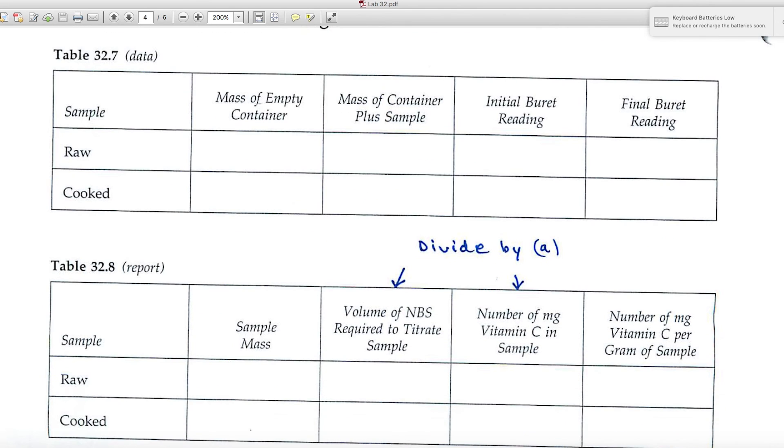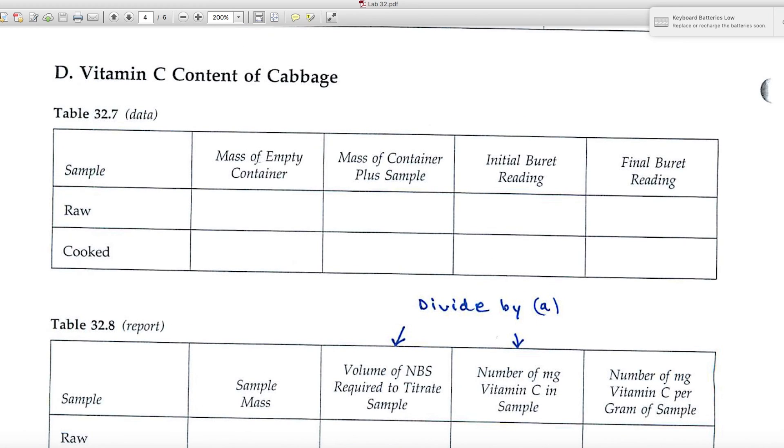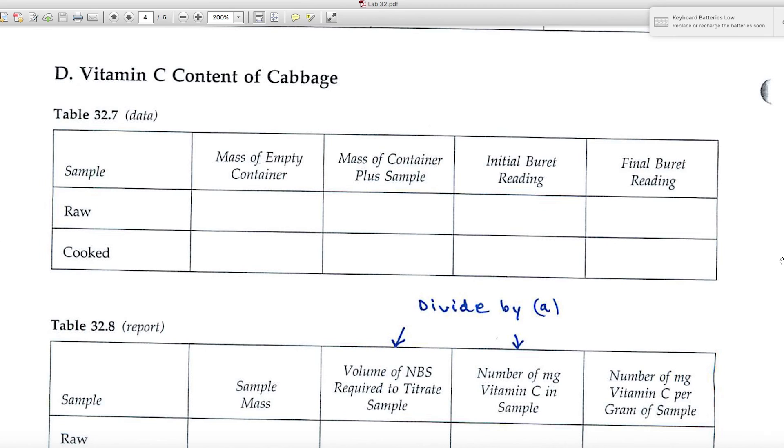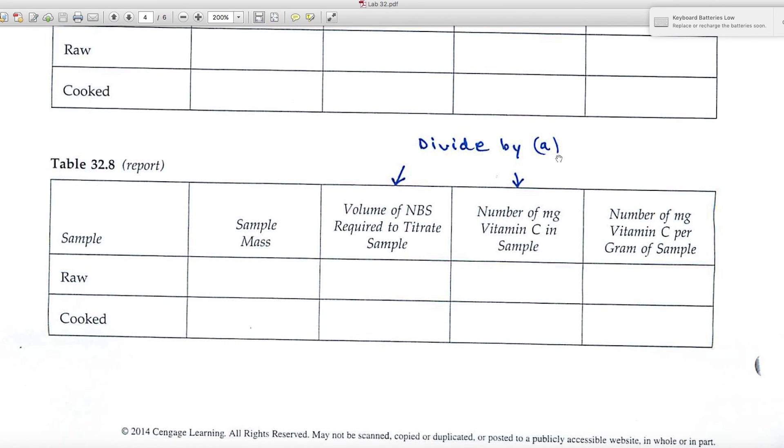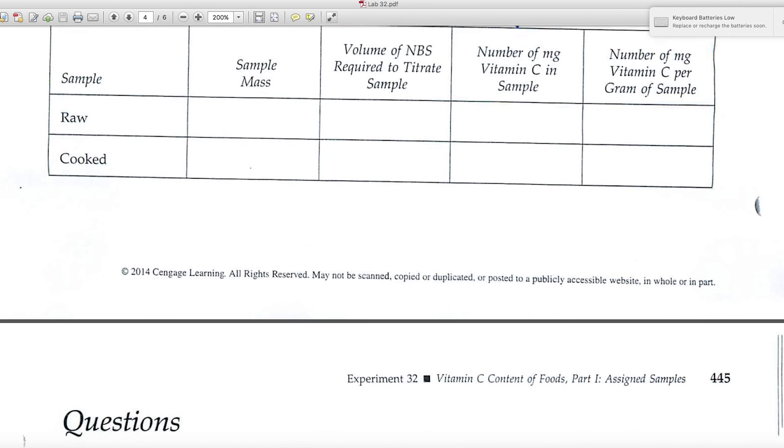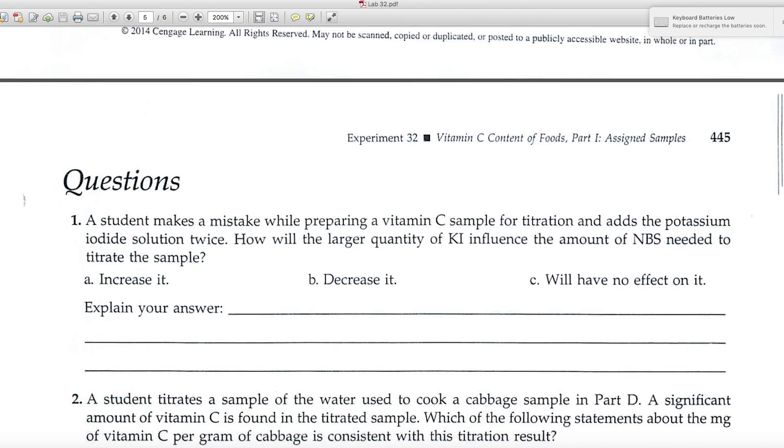In Part D you look at the vitamin C content of cabbage, a solid. You'll have some masses, initial and final burette readings. And then in the report, again you'll use that value of a to calculate the milligrams of vitamin C in the sample.